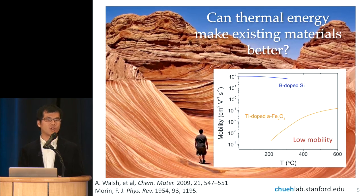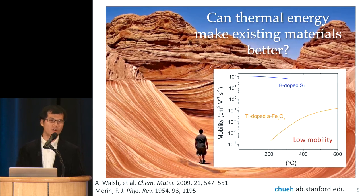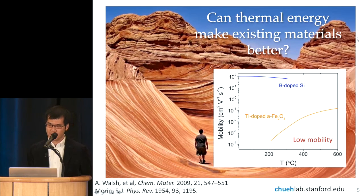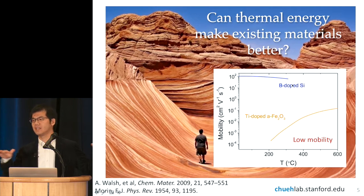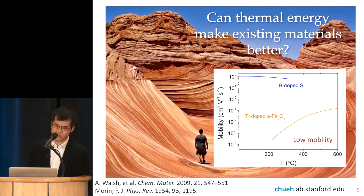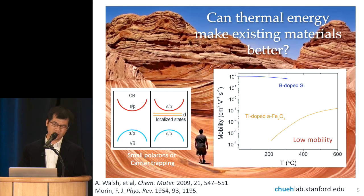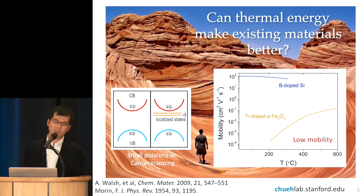One of the initial ideas was to look at how transport properties of semiconductors depend on temperature. Many of these earth-abundant oxides have very low charge carrier mobility, which means it's hard to take the electrons or holes out of the material without them recombining and thereby converting them into heat. In silicon, the mobility is largely independent of temperature and is very high, about 100 cm² per volt per second. But for iron oxide, it's immeasurable at room temperature, and you need to go to several hundred degrees Celsius. This is a very general phenomenon in metal oxides because the d-orbitals, especially in transition metal oxides, are typically very narrow.